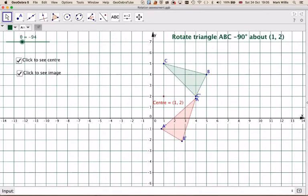So if I put it at minus 90, the answer will be there. Okay, so I've rotated that shape, minus 90 degrees about the point 1, 2.